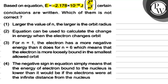The options are: Option one says larger the value of N, larger is the orbit radius. Option two says the equation can be used to calculate the change in energy when the electron changes orbit. Option three says for N is equal to 1, the electron has a more negative energy than it does for N is equal to 6, which means that the electron is more loosely bound in the smallest allowed orbit. Option four says the negative sign in the equation simply means that the energy of electron bound to the nucleus is lower than it would be if the electrons were at an infinite distance from the nucleus.